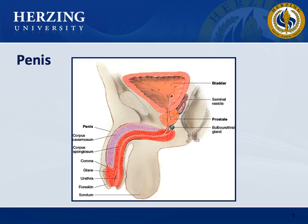The scrotum is a loose protective sac that is a continuation of the abdominal wall. After adolescence, the scrotal sac is deeply pigmented and has large sebaceous follicles. The scrotal wall consists of thin skin lying in folds, or rugae, and an underlying cremaster muscle. The muscle controls the size of the scrotum by responding to ambient temperature to keep the testes at 3 degrees Celsius below the abdominal temperature — the best temperature for producing sperm.